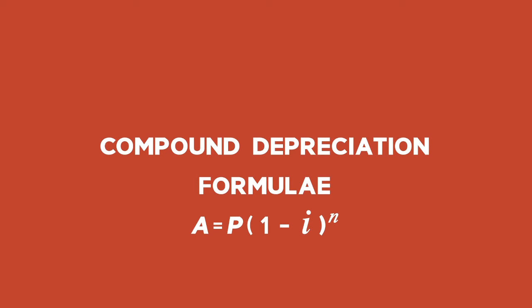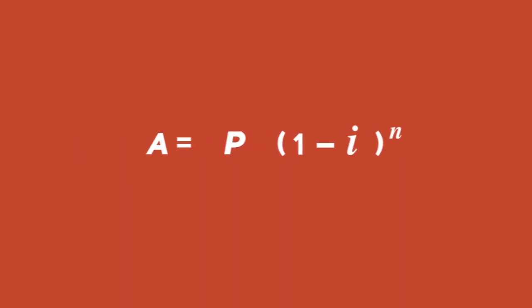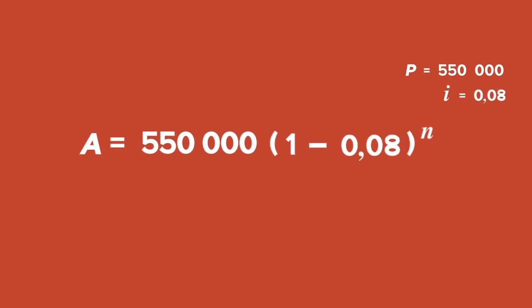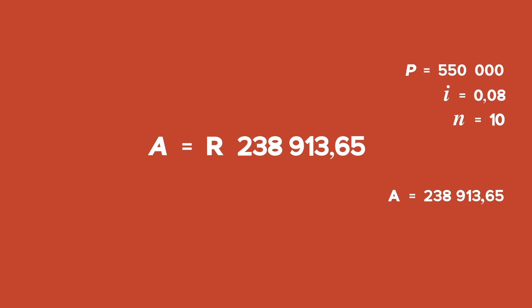Since the machine depreciates in value at a rate of 8% per annum compounded annually, we will use the compound depreciation formula. Substitute P with R550,000, the depreciation rate I with 0.08, and N with 10. The old machine would have a scrap value of R238,913.65 in 10 years time.